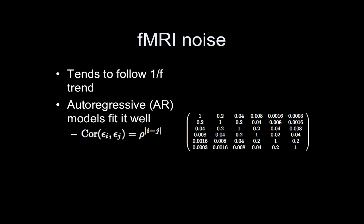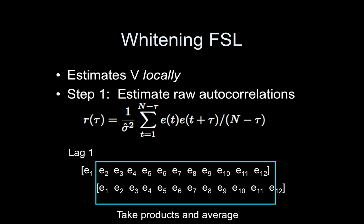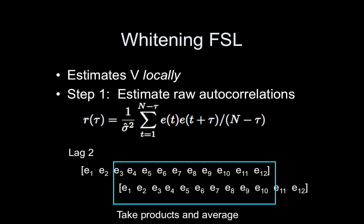So we typically assume some type of AR model, or an ARMA, or an AR plus white noise. FSL estimates the covariance locally. The first step is to get residuals from the standard GLM ignoring temporal autocorrelation. Then you estimate the autocorrelation of those residuals: for lag 1, shift the residuals one time point, take the product, and average; for lag 2, shift two time points — standard lagged correlation, up to lag 7. At higher lags, fewer data points go into the computation, so the estimate becomes noisy.